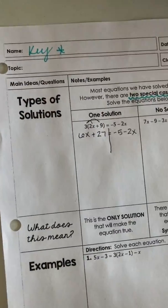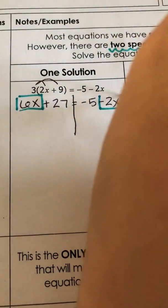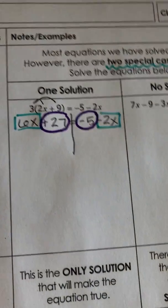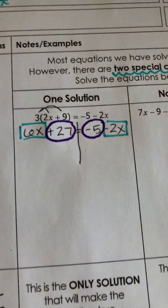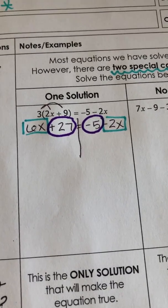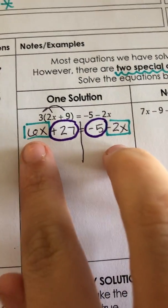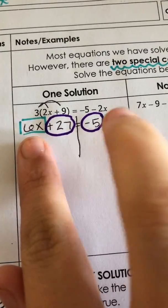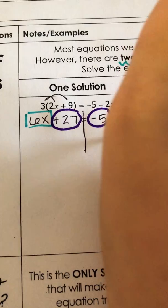Then we just have these two terms — nothing to combine yet. Split your river. I'm going to box my variable terms and circle my constants to see if I can combine any like terms. We've got variable, constant, river, constant, variable — so there's nothing to combine on individual sides of the equal sign. Now we need to move terms, starting with the variable term of lesser value. Negative 2x is less than 6x, so we're going to add 2x to both sides.